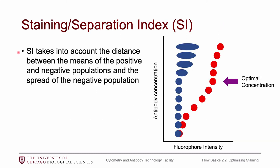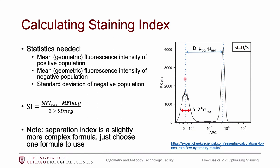The staining index (SI) gives a value to the concept I described: it takes into account the distance between the positive and negative populations — which we want as far apart as possible — and also the spread of the negative population by looking at its standard deviation. The highest SI is where you get the largest difference between positive and negative populations with the least spreading in the negative. Separation index is very similar — just pick one formula and use it consistently.